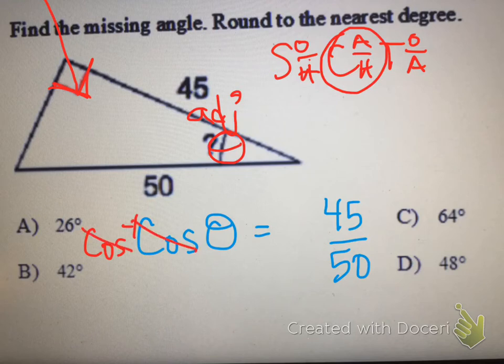And these two cancel themselves out, so all we're left with on this side is theta equals cosine inverse of 45 over 50. And this is what we'll put in our calculator.